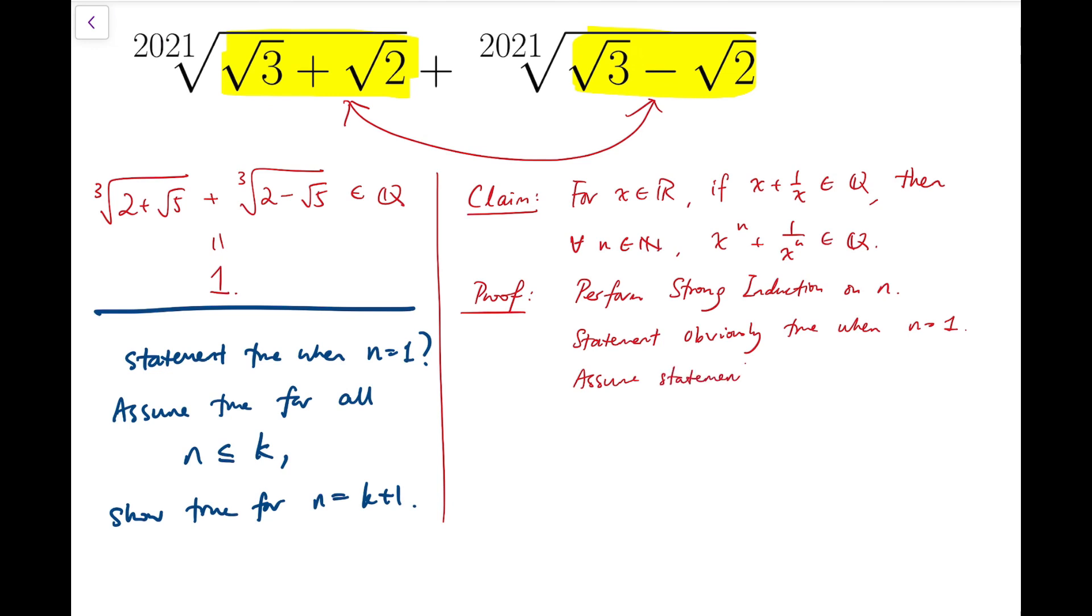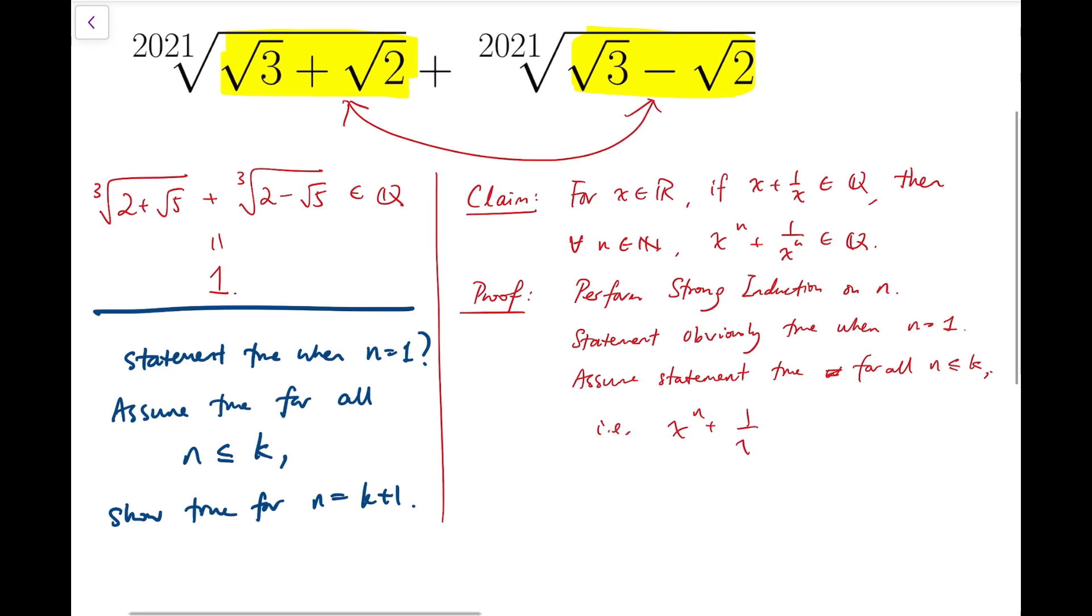Now I turn to assume that the statement is true for all n that is less than or equal to k, some natural number k, which means this expression is rational for all n that is less than or equal to k.